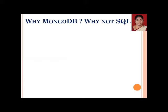Why MongoDB and not SQL? Big data is data that comes in large volume, various varieties, and at high speed. These three Vs — velocity, volume, and variety — form the core terminology of big data. While more Vs have been added over time, these three are the main focus.